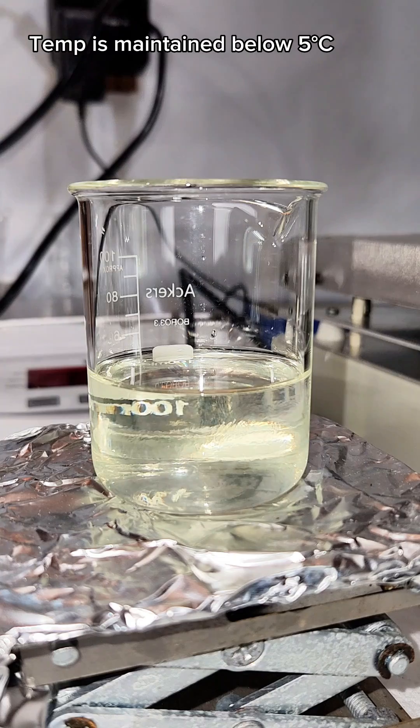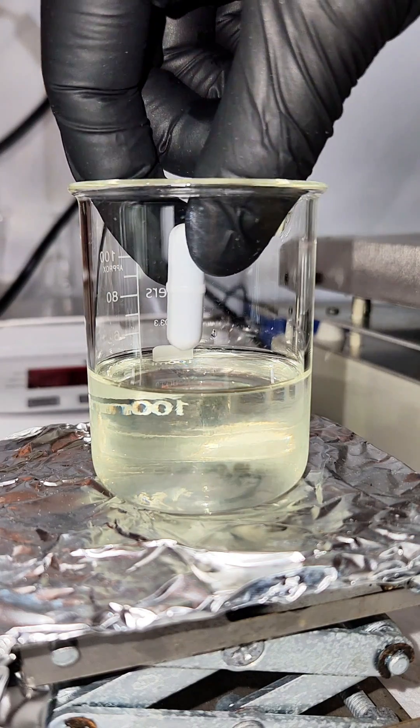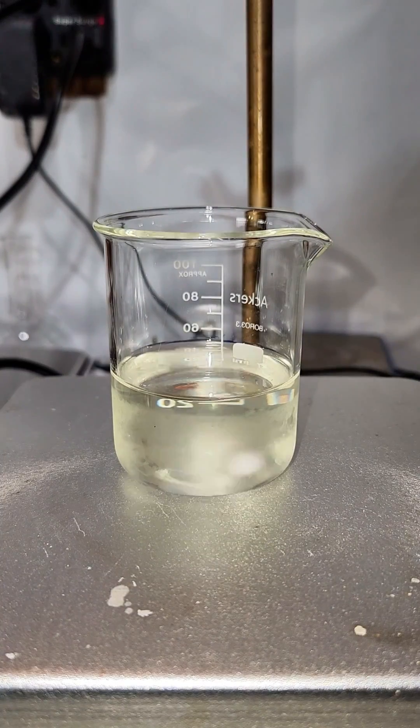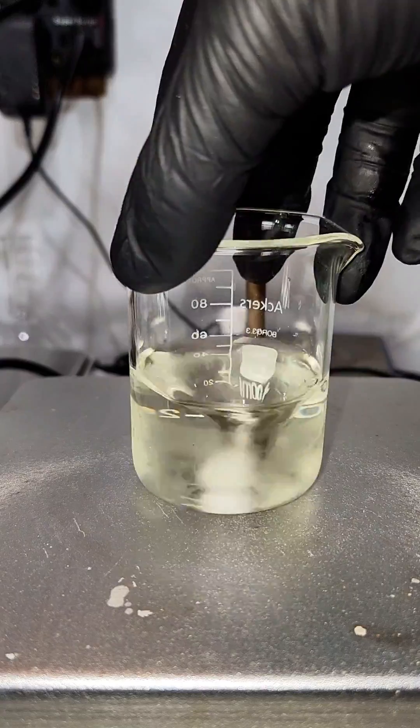What I've done here is basically made a really alkaline bleach solution and so it's really important that this is done at a low temperature or it will decompose the sodium hypochlorite.